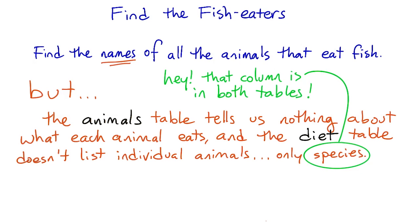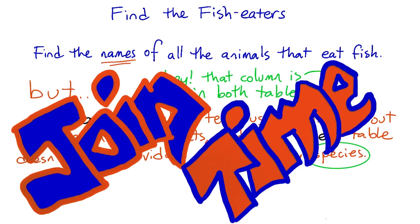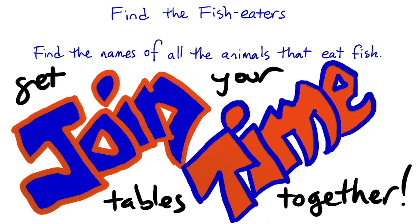And wait a minute though. That species column is in both of those tables. That means it must be join time. So if we join animals against diet, we should be able to get the answer that we're looking for.